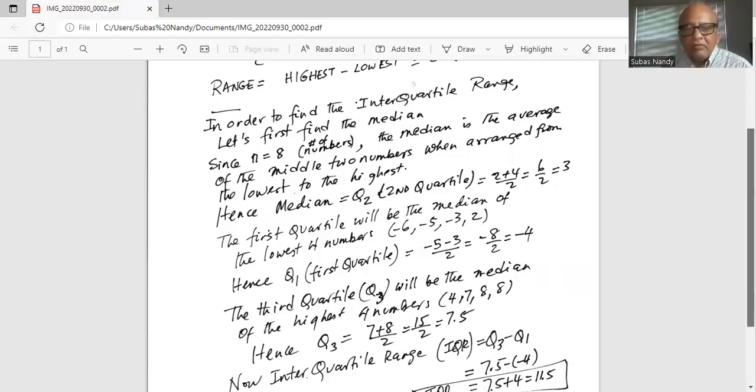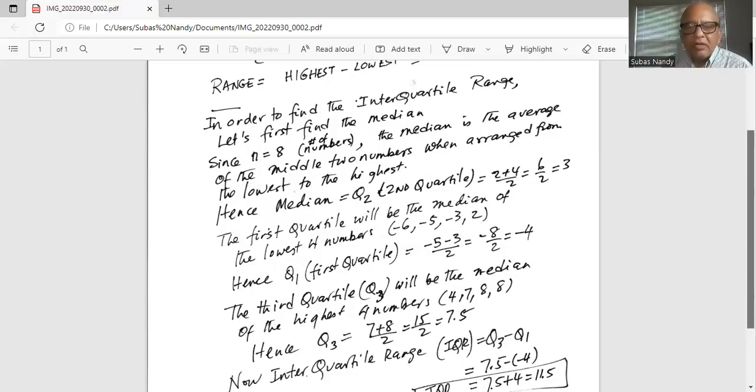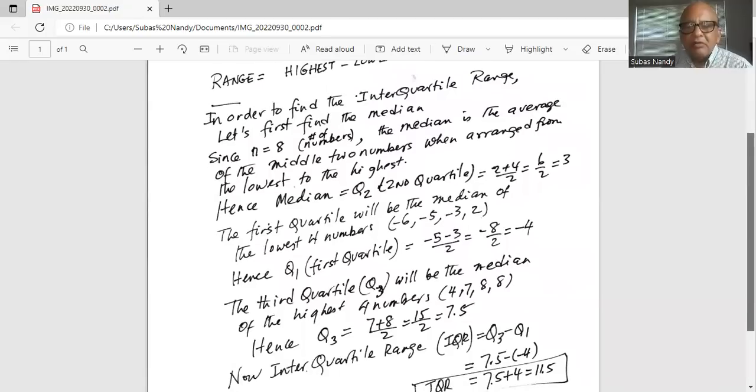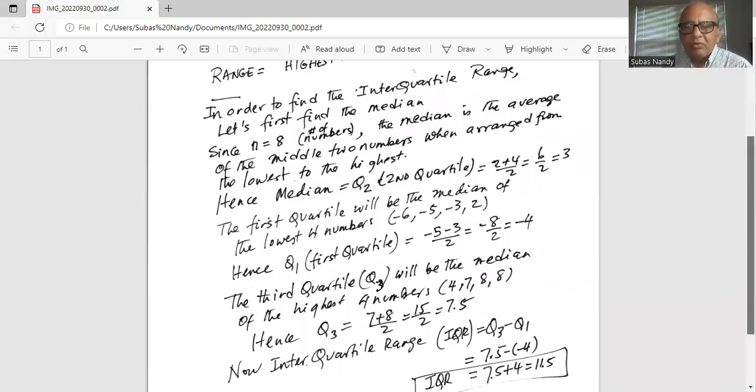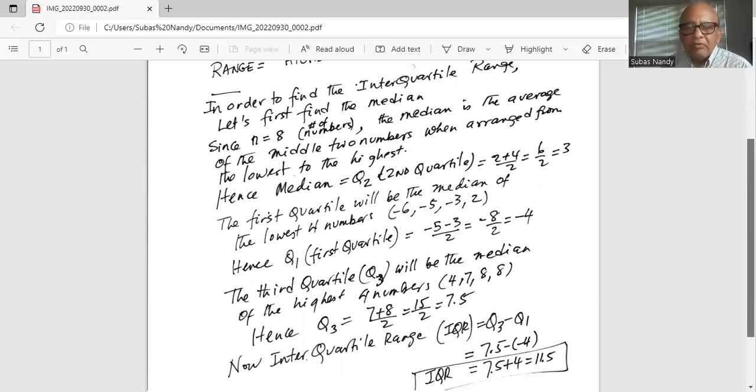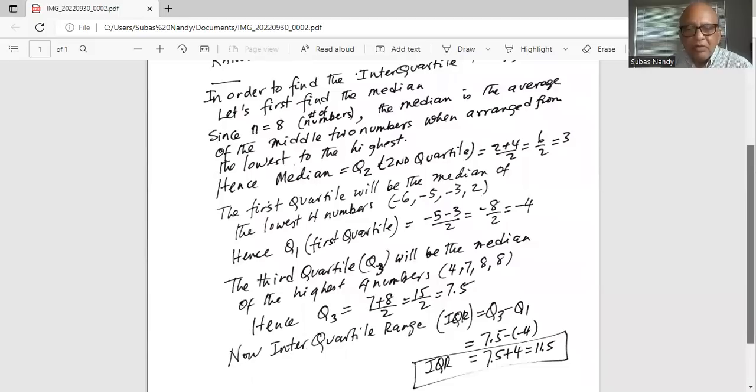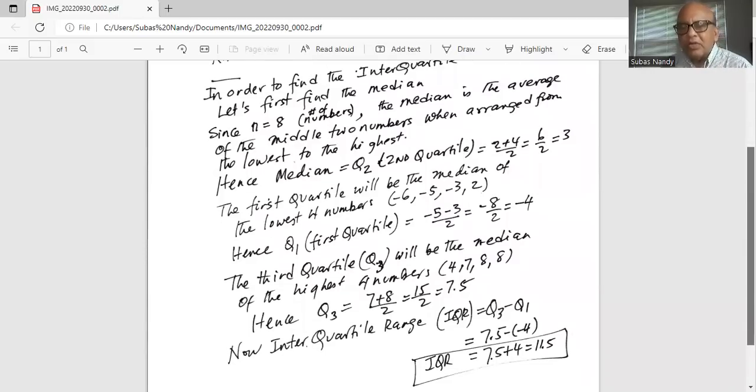We need the information on the third quartile and the first quartile in order to find the interquartile range, because interquartile range is Q3 minus Q1, which is 7.5 minus -4. Two minuses make it positive, so it's 7.5 plus 4. Hence the interquartile range...